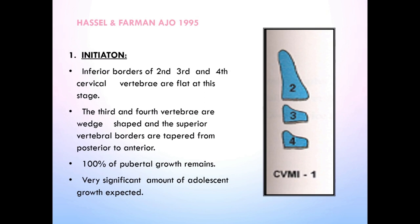Stage 1 is Initiation. The lower borders of all three vertebrae — C2, C3, and C4 — are flat. The bodies of both C3 and C4 are trapezoid in shape. 100% of pubertal growth remains. The peak in mandibular growth will occur on average two years after this stage.